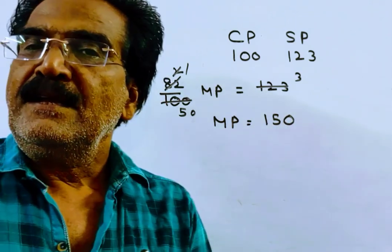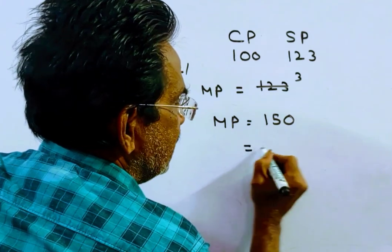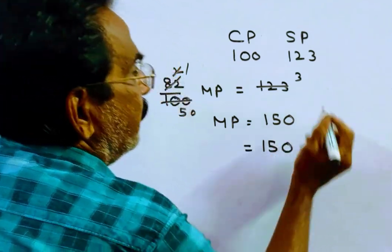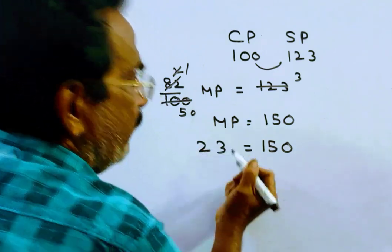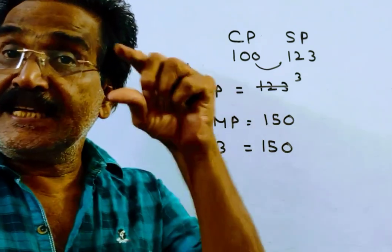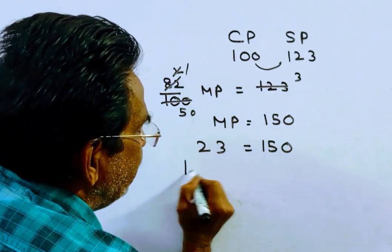Marked price is equal to 150. If this is the marked price, profit is 23. But it is given if he gains only 18 rupees 45 paise, if the profit is 18 rupees 45 paise, then what is the marked price?